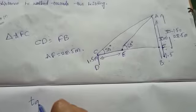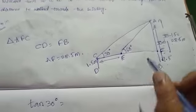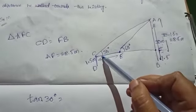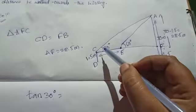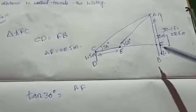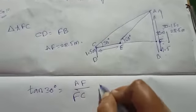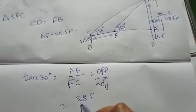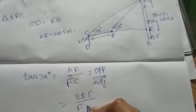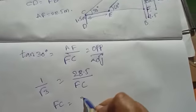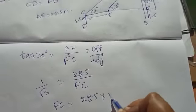From triangle AFC, tan 30 degrees equals opposite side by adjacent side, which is AF by FC. We know AF equals 28.5. Since tan 30 degrees equals 1 by root 3, therefore FC equals 28.5 into root 3.